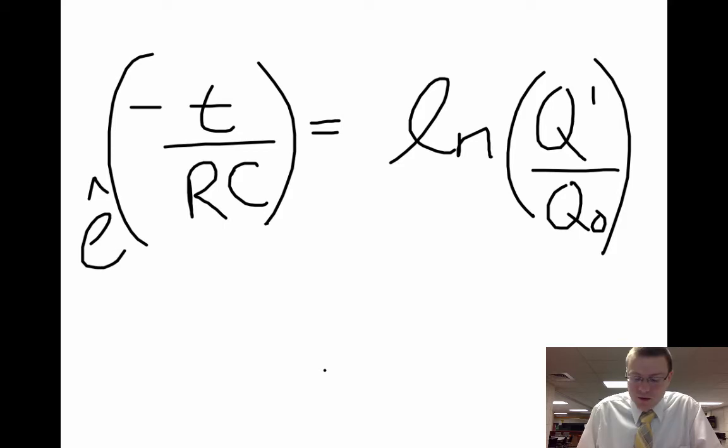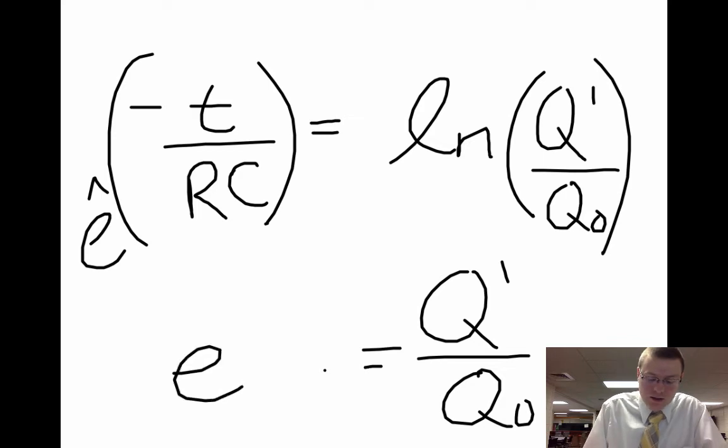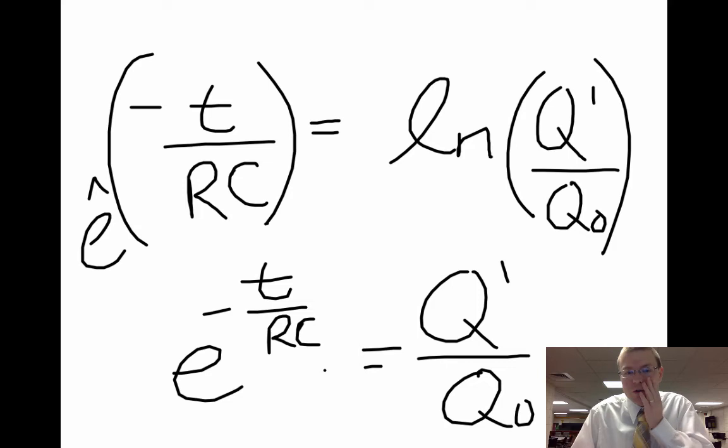I do the same thing over here. So what I end up getting is Q at any moment in time over the original charge equals e to the minus T over RC. And we've seen this before in drag forces. We're now seeing it here in discharging capacitors.